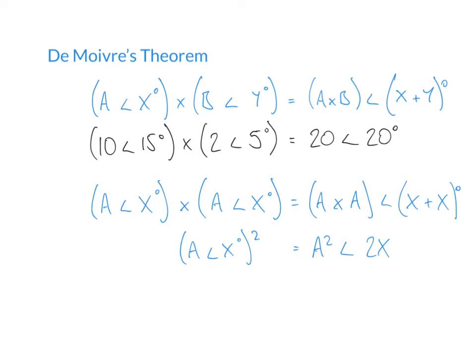De Moivre's theorem is a generalization of this process, where we've taken a number in polar form raised to a power. Let's write this in a more general form: r — which we'll call the modulus — at an angle of theta, raised to a power n, is equal to r to the power n at an angle of n times theta. This is our generalized form of De Moivre's theorem, and we can see it matches our example above.